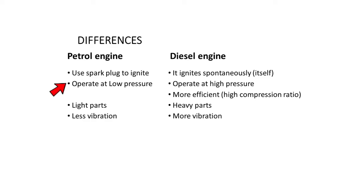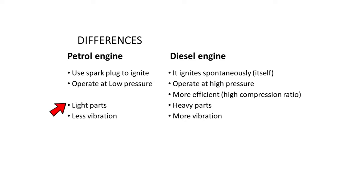The petrol engine operates at very low pressure, while the diesel engine operates at very high pressure so that compression causes ignition. The diesel engine is also more efficient compared to petrol. The efficiency is mostly based on how compression happens inside the combustion cylinder. In terms of moving parts, the petrol engine is lighter, while the diesel engine parts are heavier, even in equivalent vehicles.